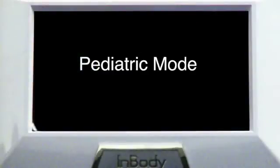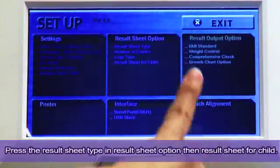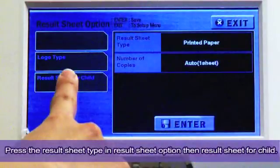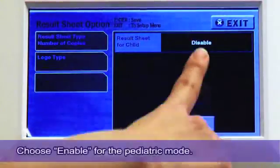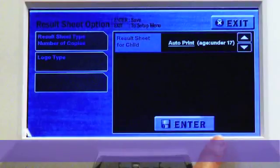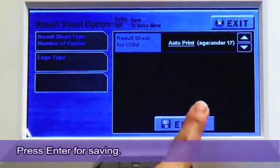Pediatric Mode. Press the Result Sheet Type in Result Sheet option and then Result Sheet for Child. Choose Enable for the Pediatric Mode. Press Enter for saving.